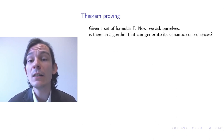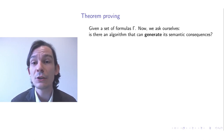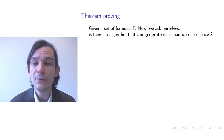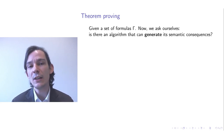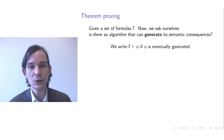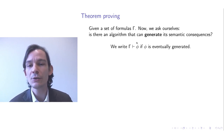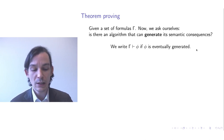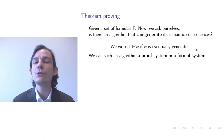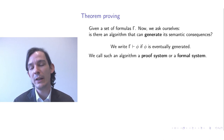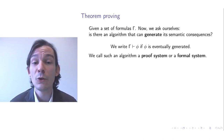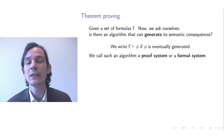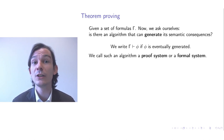Let's consider the process of theorem proving. If you're given a set of formulas gamma, you can ask yourself: is there an algorithm that can generate all its semantic consequences? We write gamma ⊢ phi if phi is eventually generated by such an algorithm. We call such an algorithm a proof system or a formal system, and describing such algorithms typically involves defining a proof system.